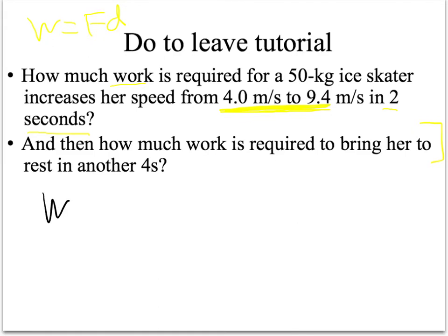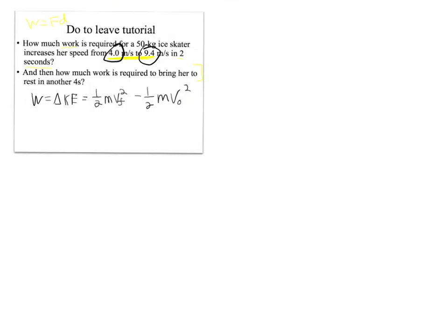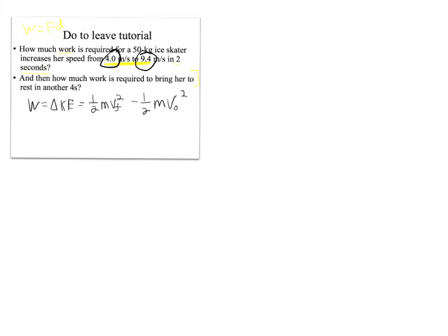The work-kinetic energy theorem says work equals the change in kinetic energy, which is one-half mass times final velocity squared minus one-half mass times initial velocity squared. We have a final velocity and an initial velocity. Listing givens would probably be helpful here, because then you realize you know all the variables in the work-kinetic energy theorem — mass, final velocity, initial velocity — and the only unknown is work. The equation is already solved for what we want, so we can just plug in.